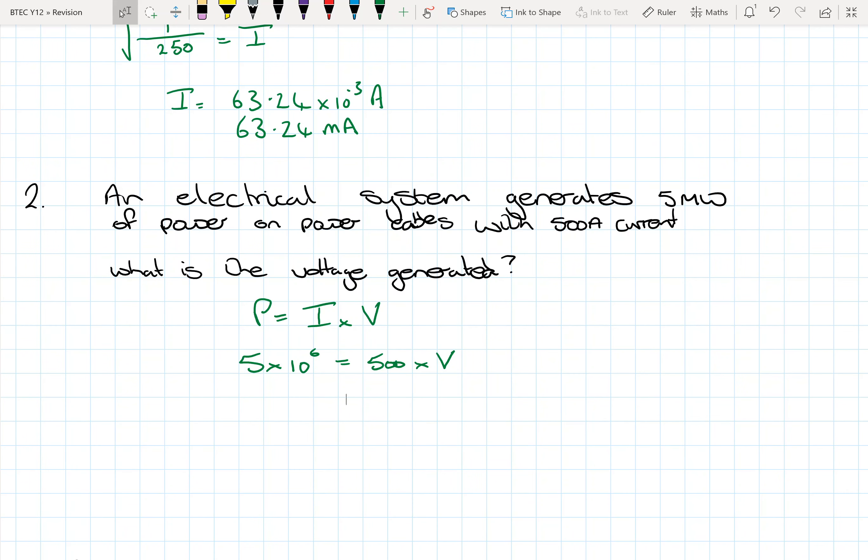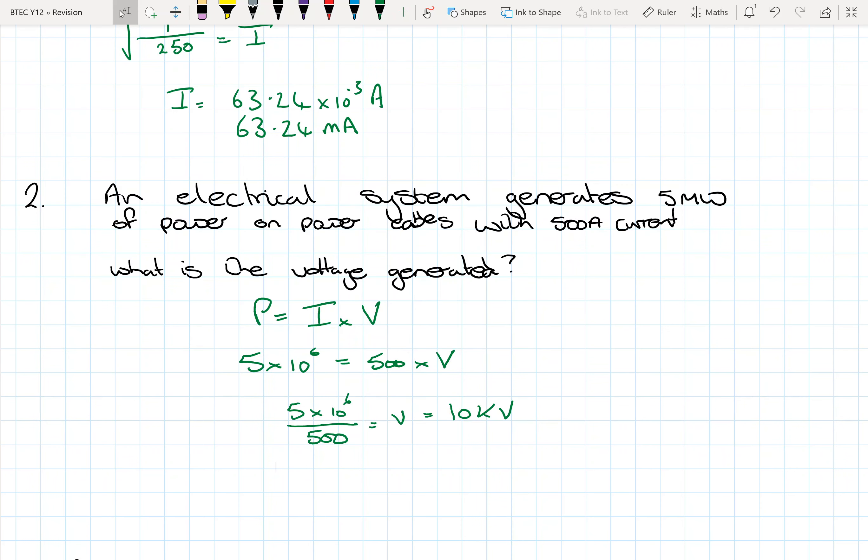So just inserting the numbers into power is equal to current times voltage. We've got that. So then we can do a little bit of rearrangement. So we've got 5 megawatts divided by 500 amps equals our voltage, which then ends up being 10 kilovolts.